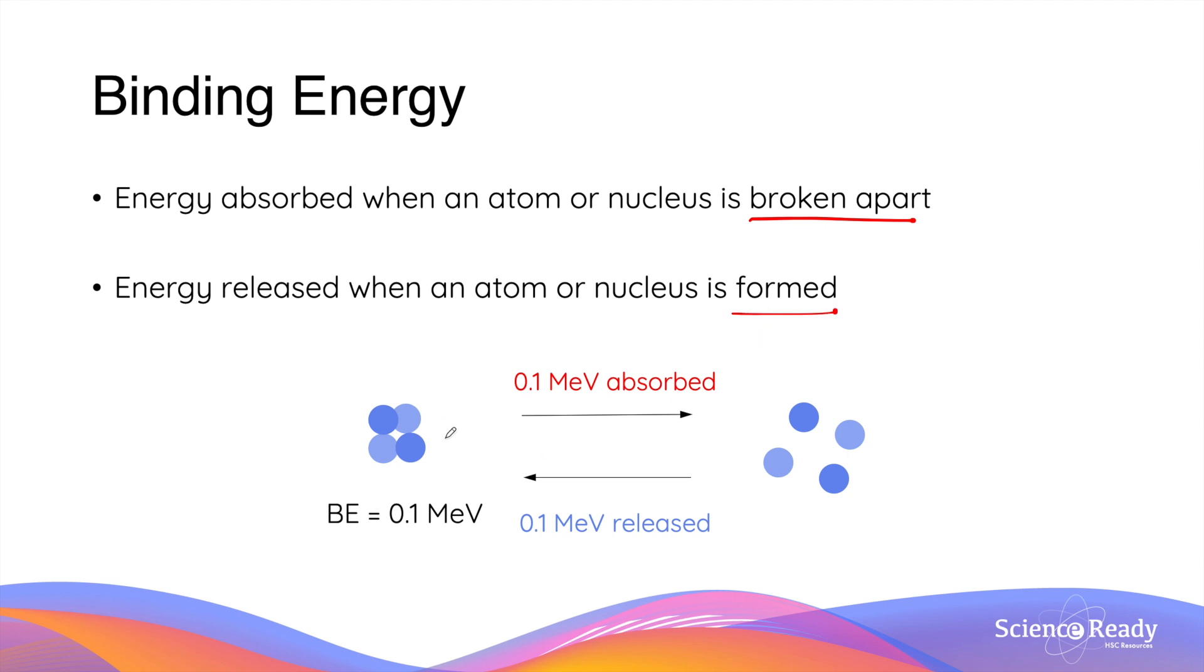For example, if this particular nucleus has a binding energy of 0.1 mega electron volts, when it is broken apart, it will absorb 0.1 MeV of energy to form the constituent nucleons in the nucleus.